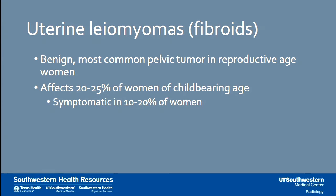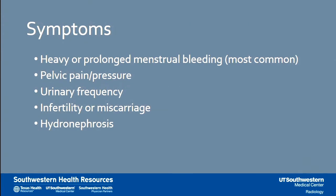The first one I'm going to talk about is treating uterine fibroids. Fibroids are the most common pelvic tumor in reproductive age women. They're benign, affect 20% to 25% of women of childbearing age, and are symptomatic in 10% to 20% of women. By the time women reach age 50, approximately 70% to 80% of women have fibroids, not necessarily symptomatic but present. Symptoms include heavy or prolonged menstrual bleeding, pelvic pain, pressure, dyspareunia, urinary frequency, infertility or miscarriage, and even hydronephrosis from the enlarged uterus pressing on the ureters.